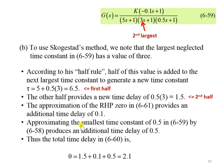And then, approximating the smallest time constant of 0.5 in this function produces an additional time delay of 0.5.